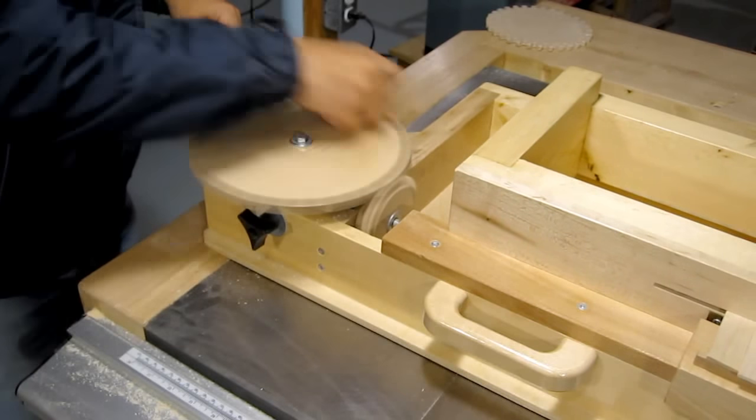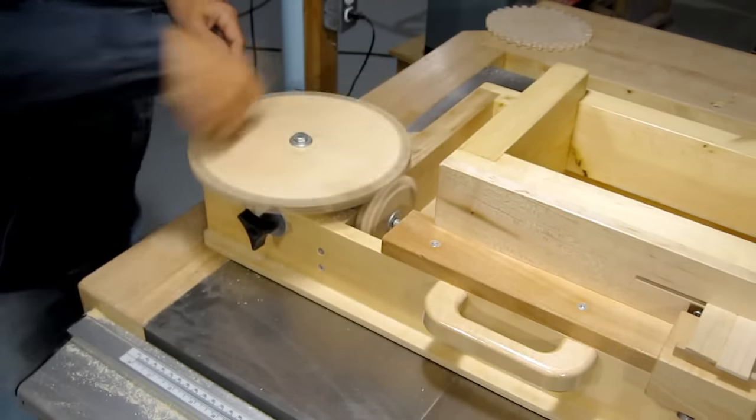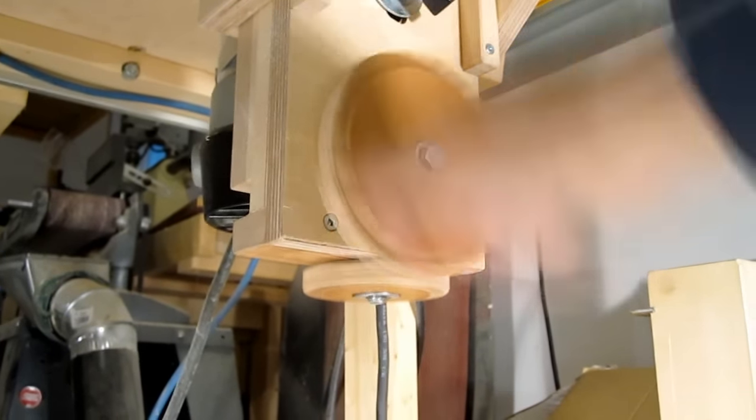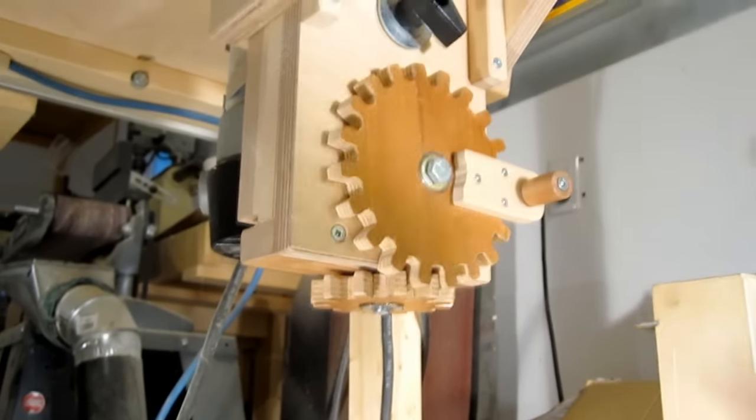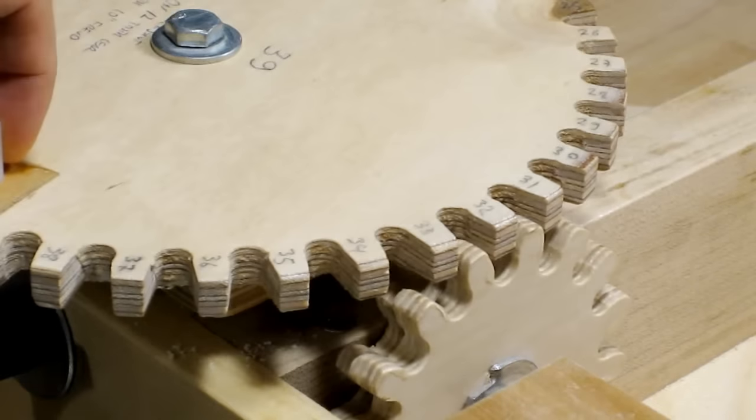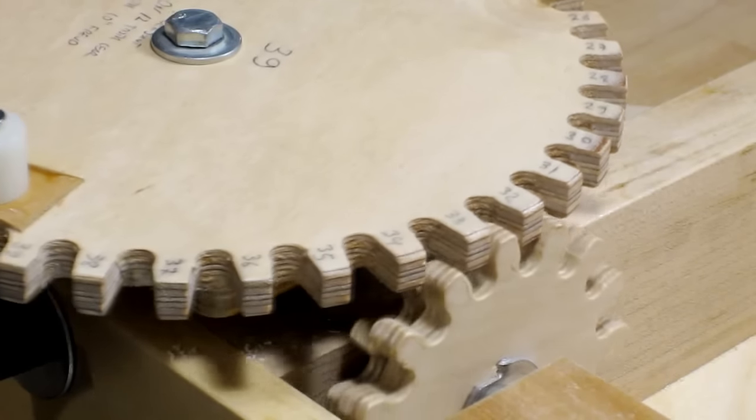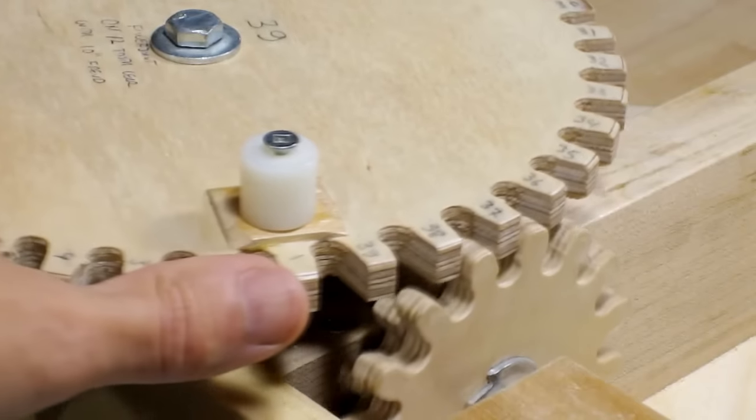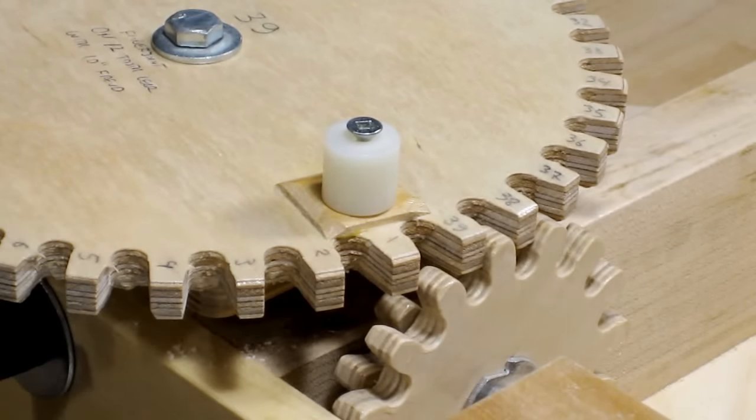This video is about making gears like the ones I use in my screw advance box joint jig, but I used exactly the same kind of gears for my wooden router lift also. Normally to have gears go at a right angle to each other you need bevel gears, but these gears are just flat gears and surprisingly they work fairly well going at a right angle.